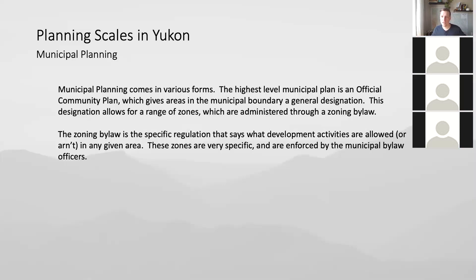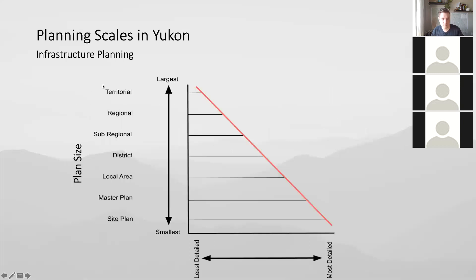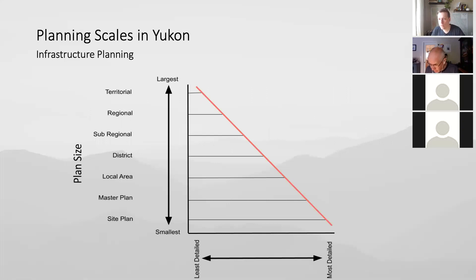Are there any questions about the planning scale? A student asks: under the UFA, are Yukon First Nations only involved in making their own regional plans, and not in sub-regional, district, or others? The answer is that First Nations are active parties in both regional and local area planning. The renewable resource councils are also an important part of the process — they're at the forefront of local area planning and regional planning, though their specific role varies depending on the final agreement.